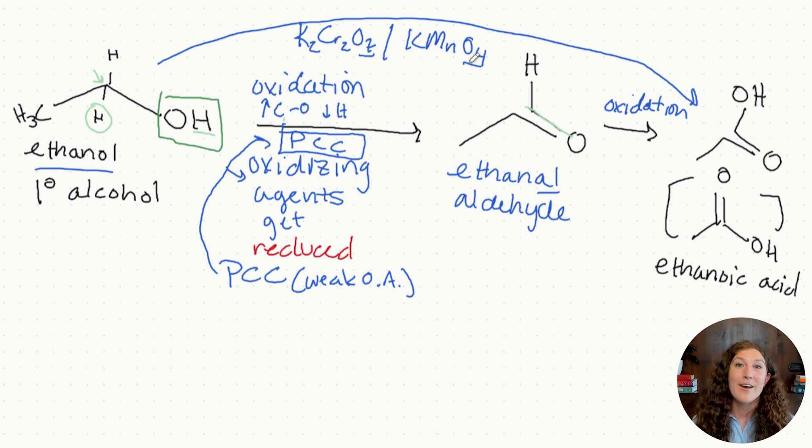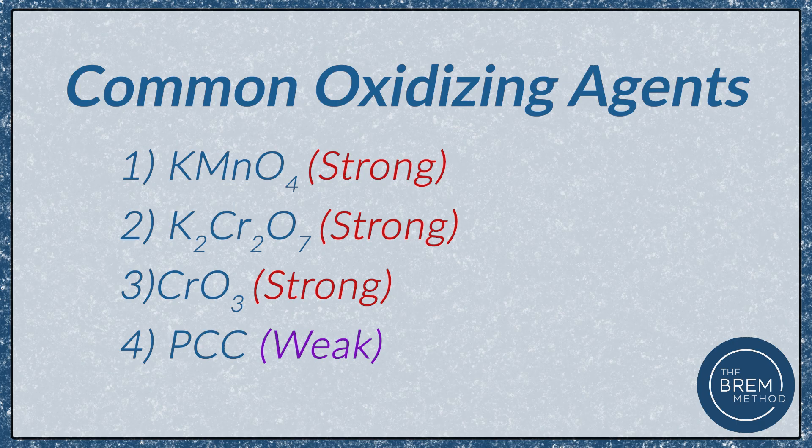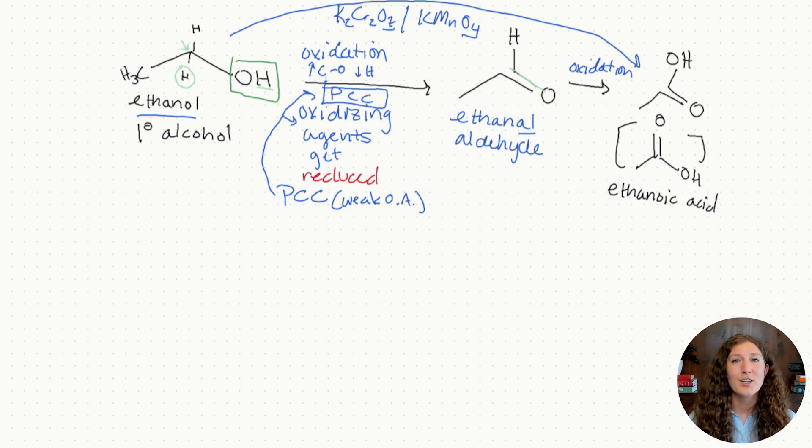Here's a full list of the oxidizing agents that are nice to know for the MCAT. As you're learning these, recognize that all of them are doing the same type of reaction — whether they're better or worse really depends on their chemical composition and how badly they want those electrons. Don't stress too much about memorizing all the specifics, because on the MCAT it's really just about identifying that you have an oxidizing agent and therefore you're going through an oxidation reaction.